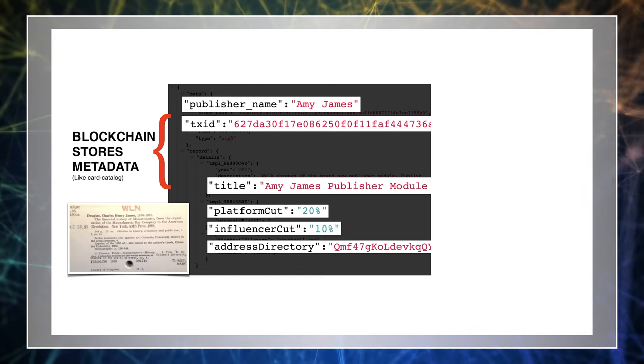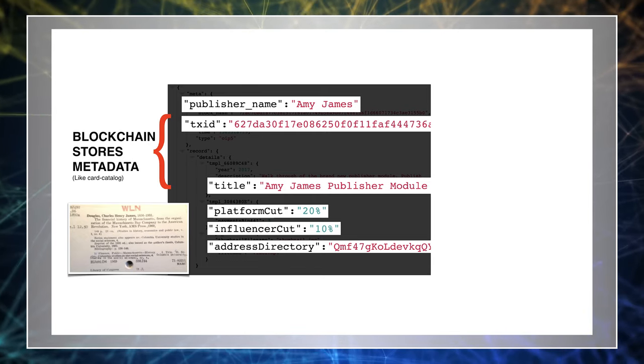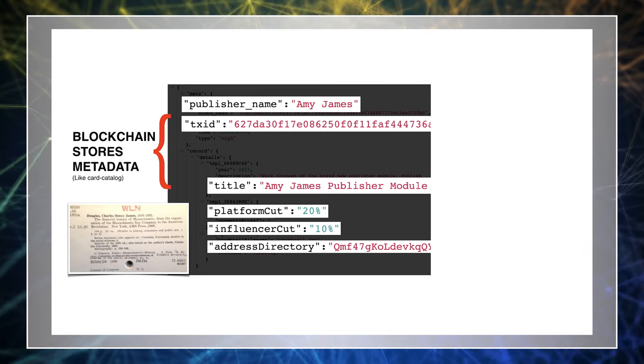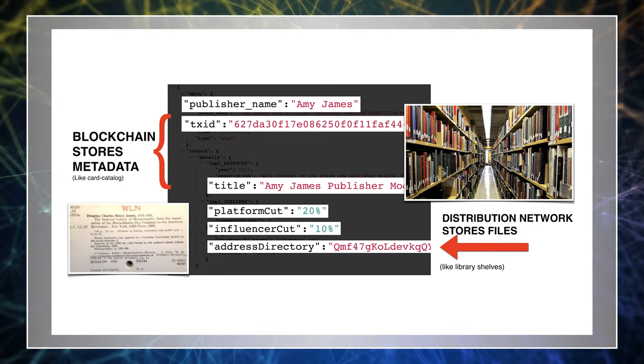Like the card catalog in a library, records in the open index have basic metadata about the content — the video title, the publisher name, and the address of the content. The record also has an ID number; you can think of this kind of like the Dewey Decimal call number. I've sometimes heard people worry that the size of the blockchain will become a problem, and that it doesn't make sense that we can distribute movies because it won't be able to scale. But this isn't a problem for OIP because we're not putting the whole file in the blockchain.